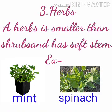Number 3: Herbs. A herb is smaller than shrubs and has a soft stem. For example, mint and spinach.